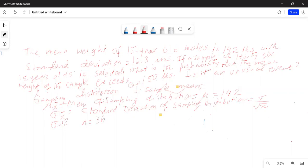Now, we know sigma is 12 and n is 36. So sigma x bar is equal to 12 divided by square root of 36, which is 12 divided by 6, equal to 2.